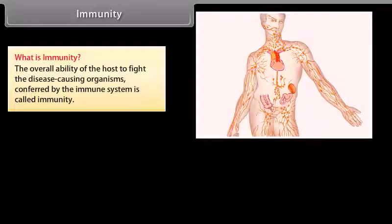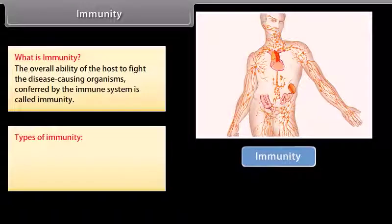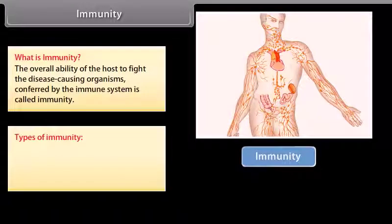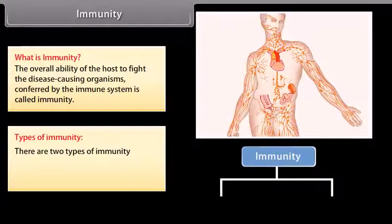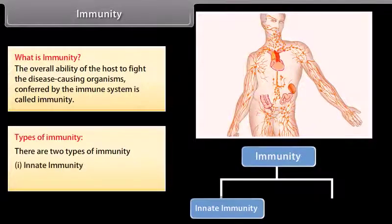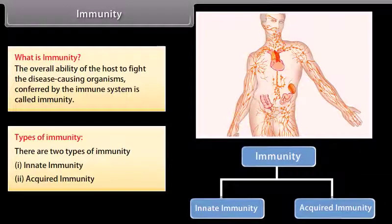What is immunity? The overall ability of the host to fight disease-causing organisms, conferred by the immune system, is called immunity. There are two types of immunity: innate immunity and acquired immunity.